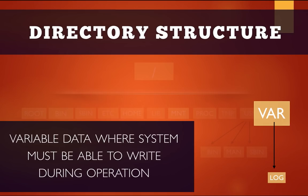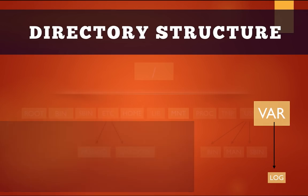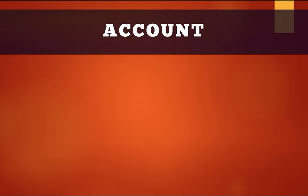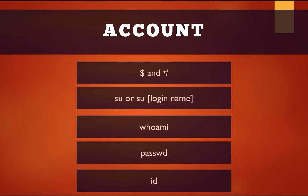The var directory stores files and folders where the system writes during operation, such as system logs. Now let's go through the basic commands. First, account-related commands: when you open a terminal, the dollar sign indicates you're logged in as a normal user, while the hash sign indicates root. The su or super user command lets you switch accounts — type su followed by a login name and it will prompt for a password.